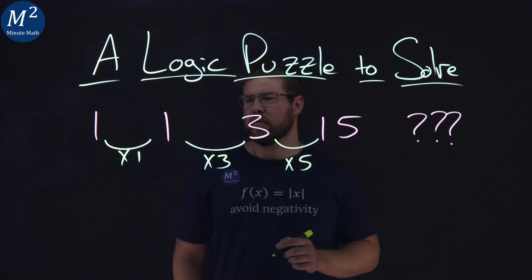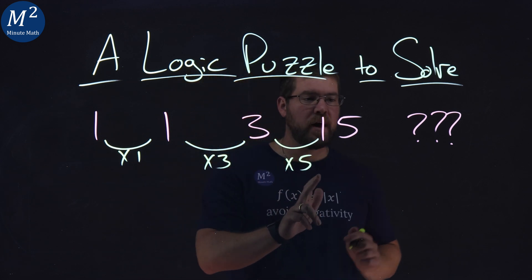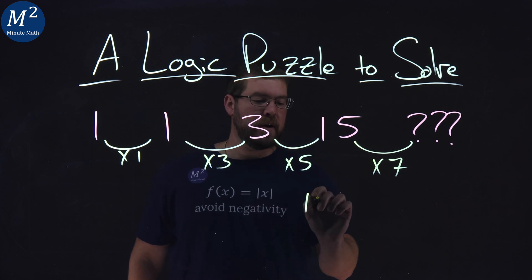And notice a pattern here, we're going by odd numbers: times 1, times 3, times 5, so then we have a times 7, and 15 times 7 is a 105.